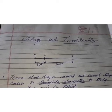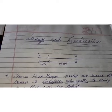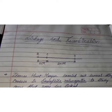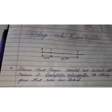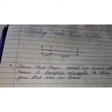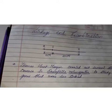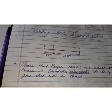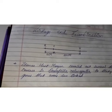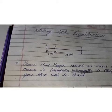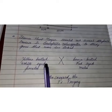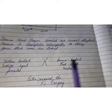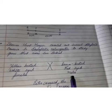We will begin with linkage and recombination. Morgan carried out several dihybrid crosses in Drosophila to study genes that were sex-linked. The crosses were similar to the dihybrid crosses carried out by Gregor Mendel in peas. For example, Morgan hybridized yellow-bodied white-eyed females with brown-bodied red-eyed males.